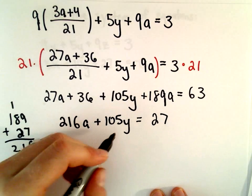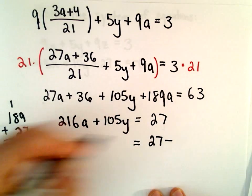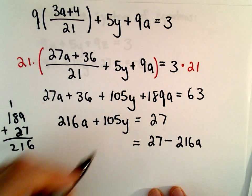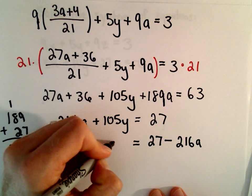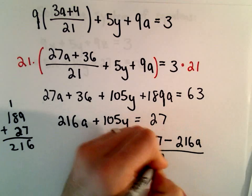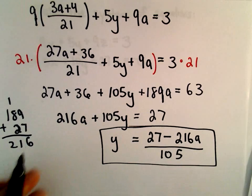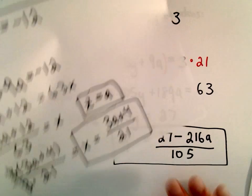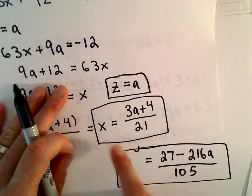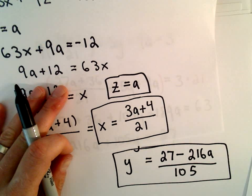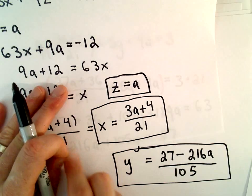And now to solve for y, I'm going to subtract the 216a. We would have 105y equals 27 minus 216a. I'm just going to divide both sides by 105. And now we've got our value for a as well. So we've now got our solution. We said z could equal the value a. x would equal 3a plus 4 over 21. And y is going to equal 27 minus 216a divided by 105.